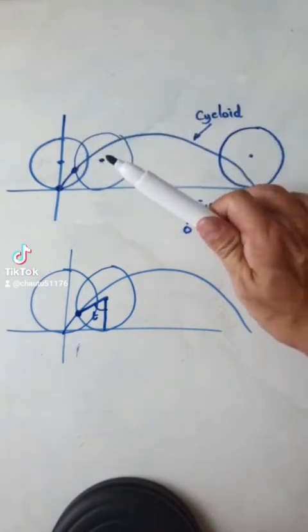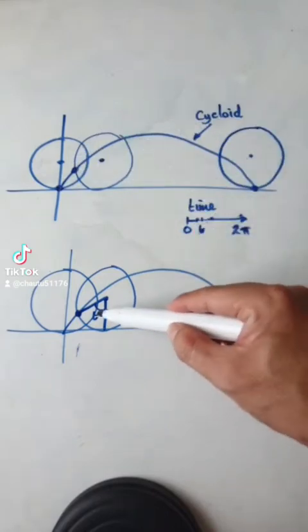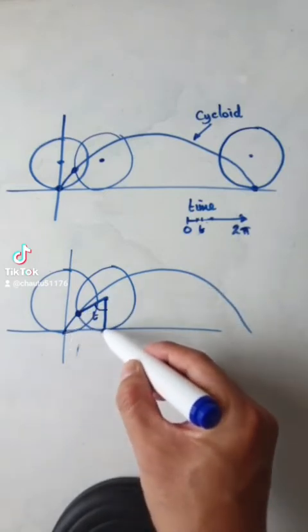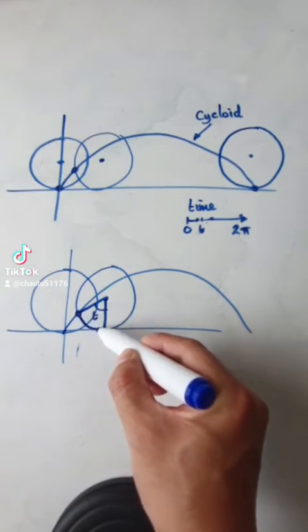So at time t, this distance here, from here to here, is the same as the arc of that circle.